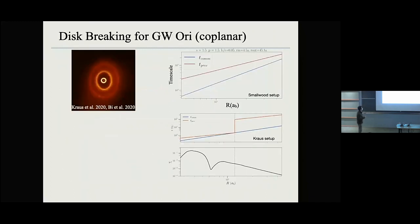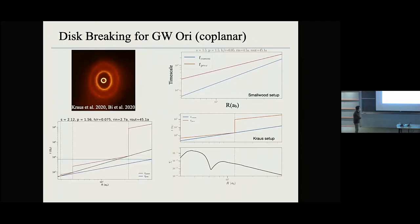In the simulation, the disk breaks at the predicted position. For the GW Ori system, we tried our analytic breaking criterion with two different setups — in one setup, you do not expect disk breaking; in the other, you could have breaking, and we ran simulations to confirm this. If you play with parameters carefully enough, you could have a scenario where the disk breaks into four rings, with one crossing another. We are still running simulations with this setup to see whether you can break into many, many rings, like observations suggest.